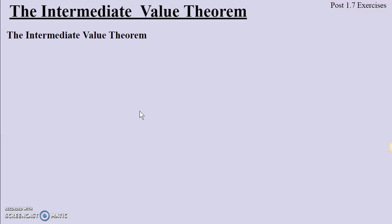When you hear the word intermediate, my brain automatically goes to the phrase beginner, intermediate, and advanced. And intermediate is between beginner and advanced. And that's kind of what the Intermediate Value Theorem says. It talks about a number that is between two other numbers.